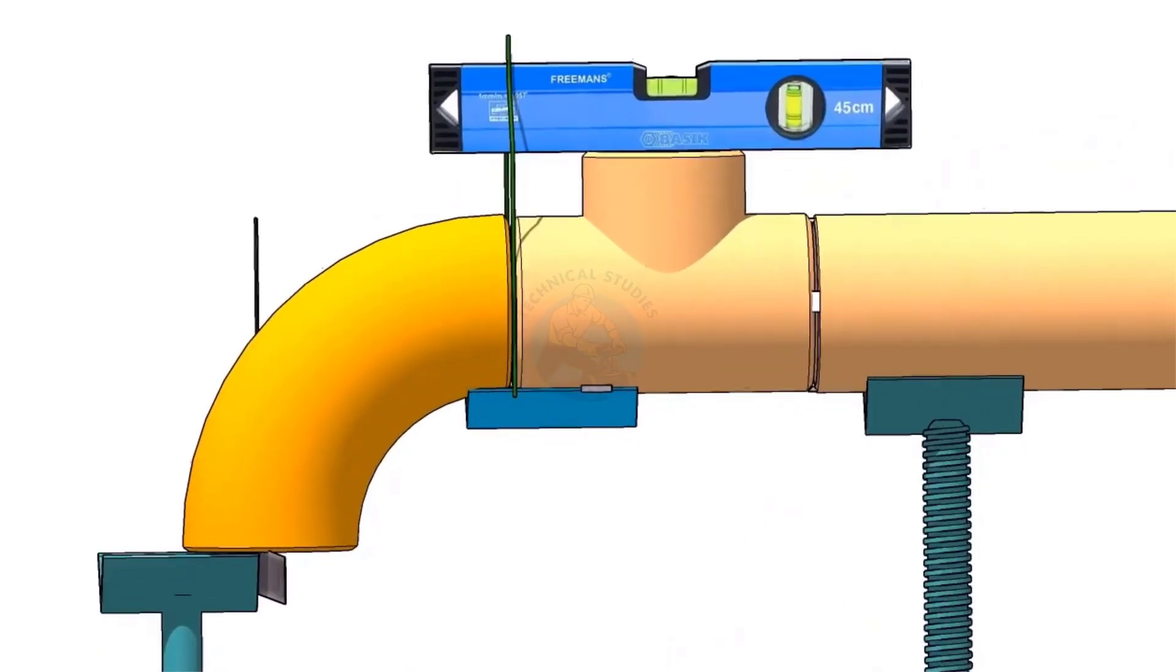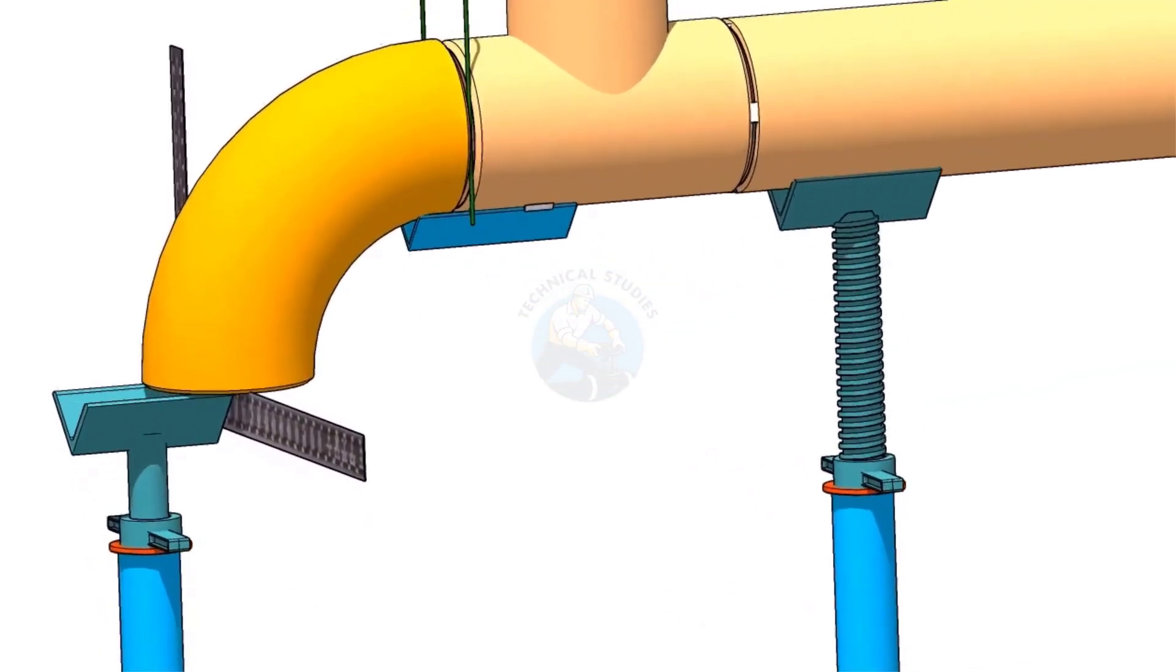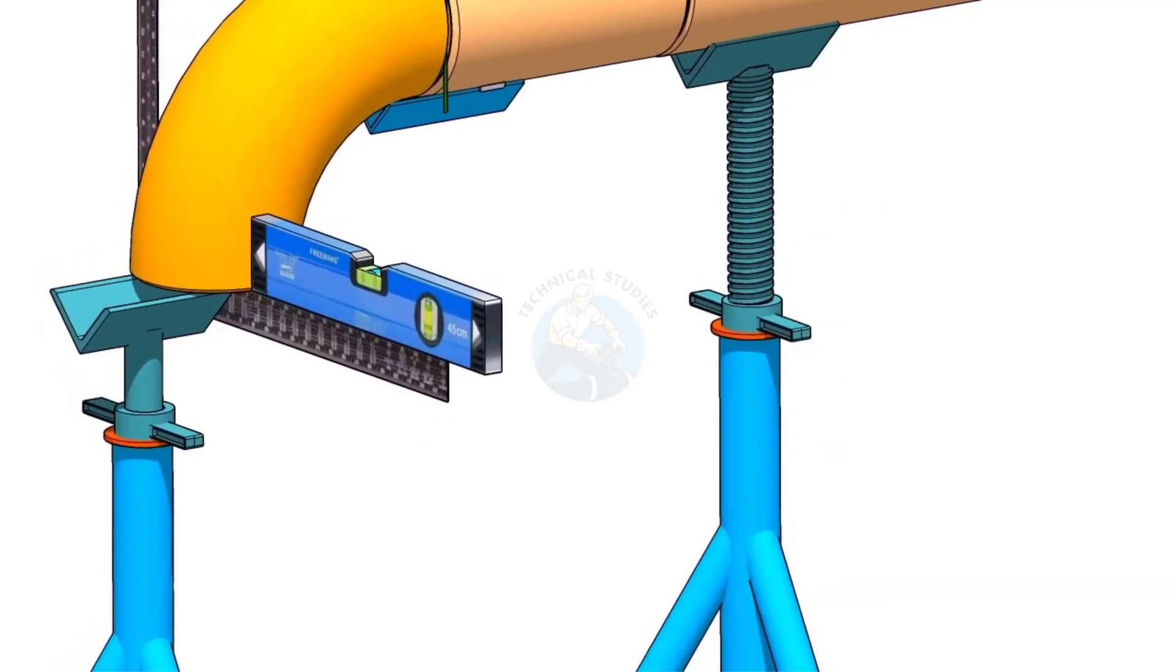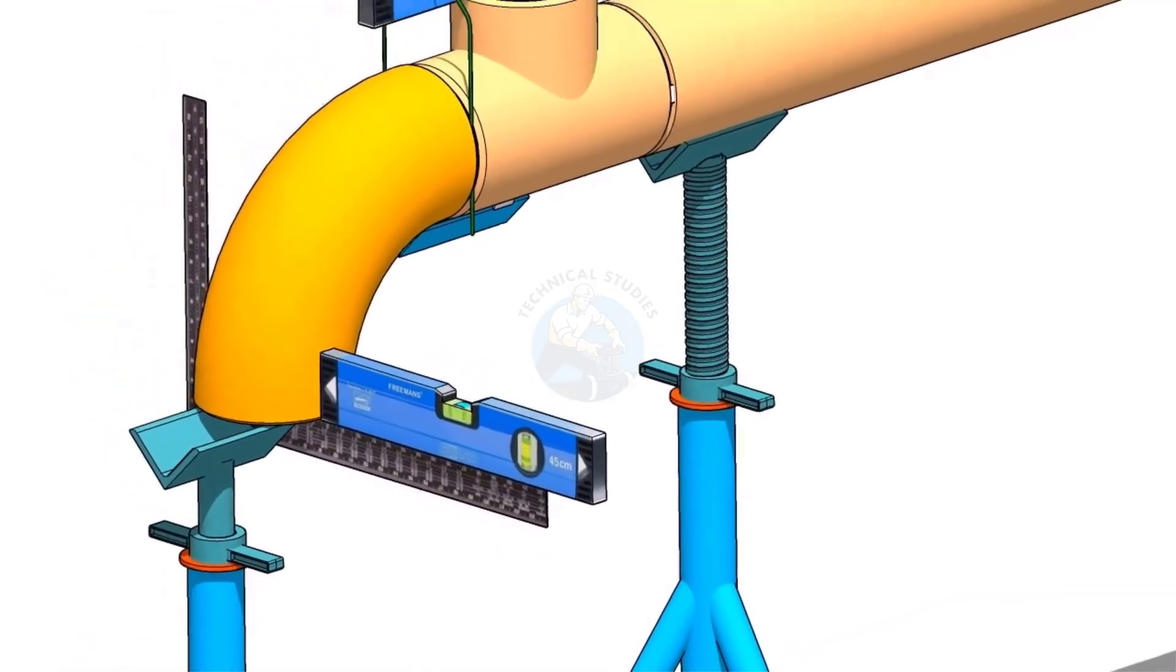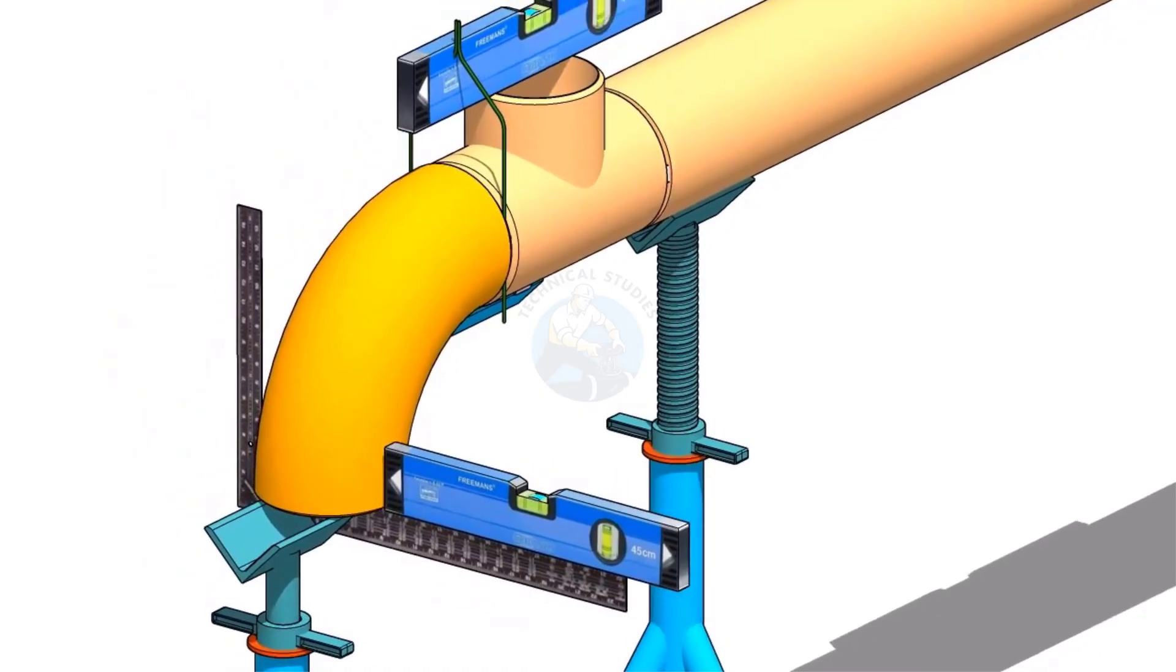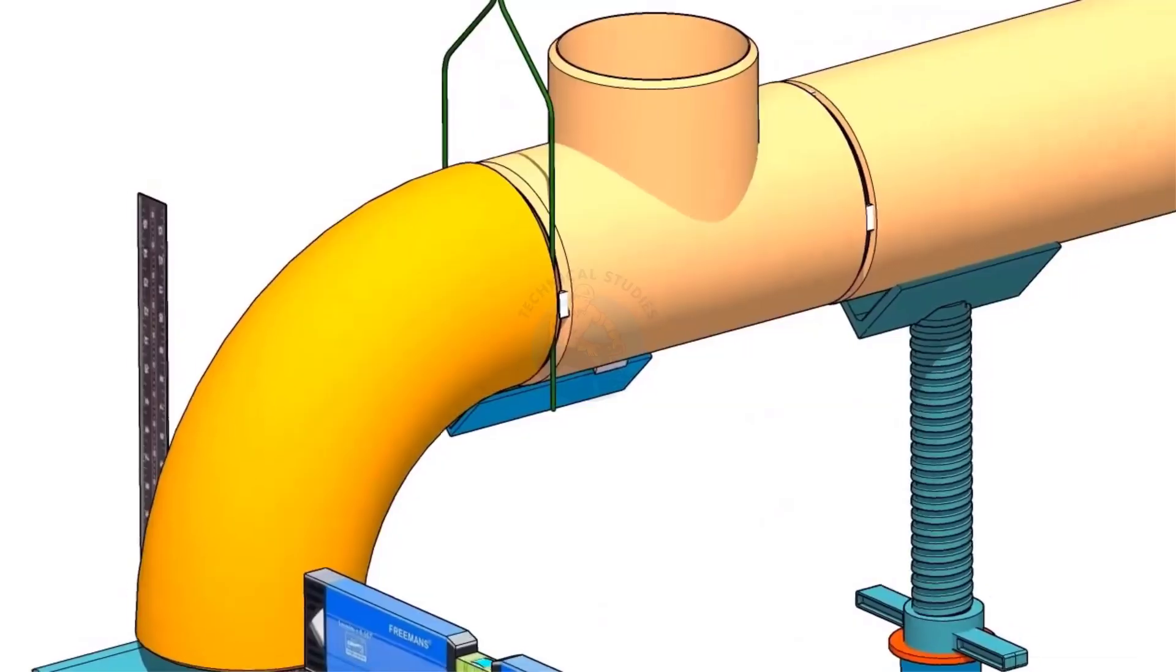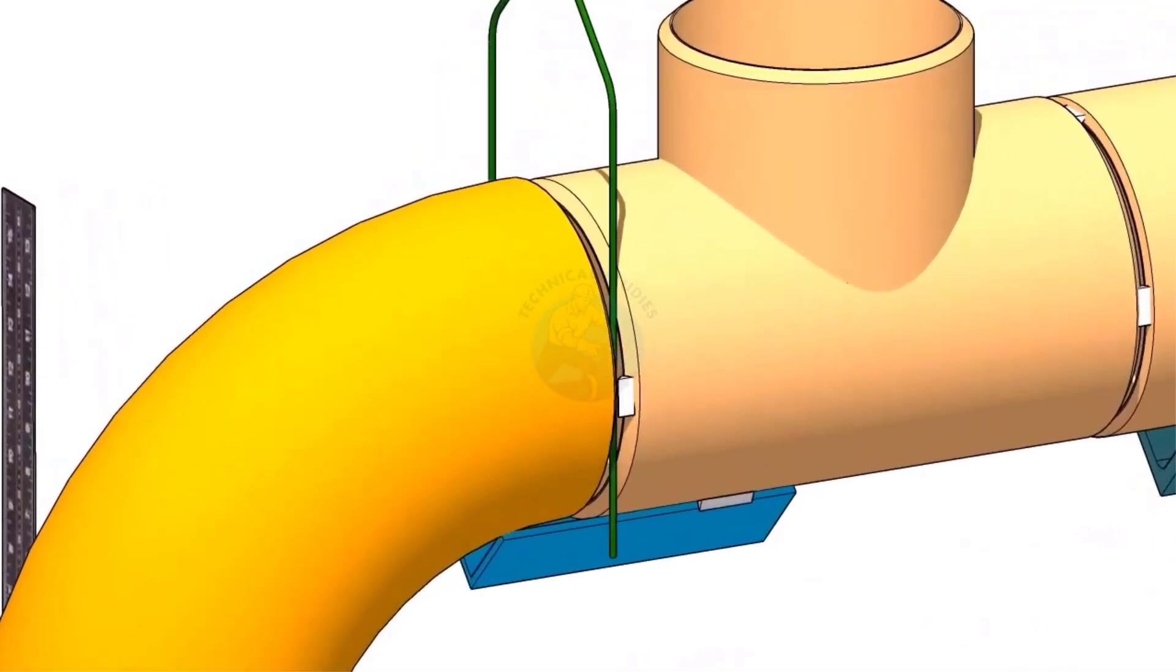Hold a large right angle or a straight edge below the elbow face firmly. Put a level bottle on the right angle as shown. Rotate the elbow to make the face level. Tack weld on both sides of the elbow with the tee.